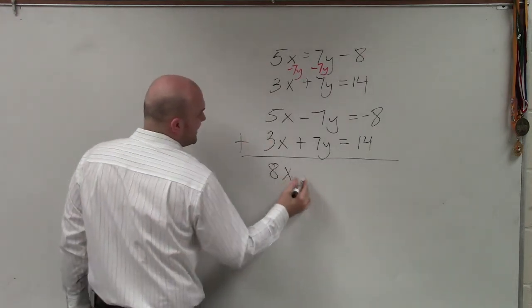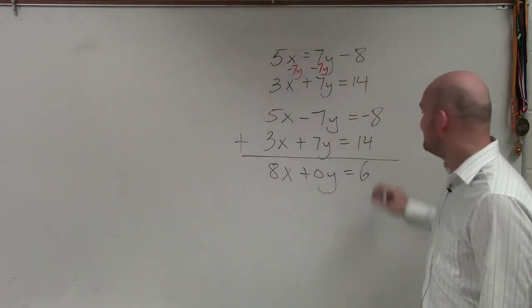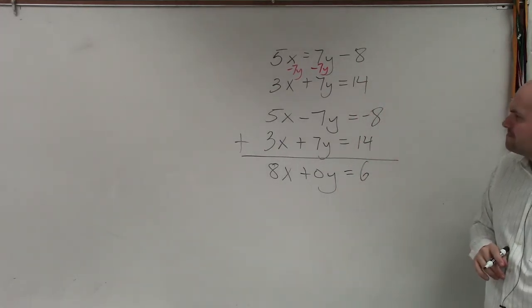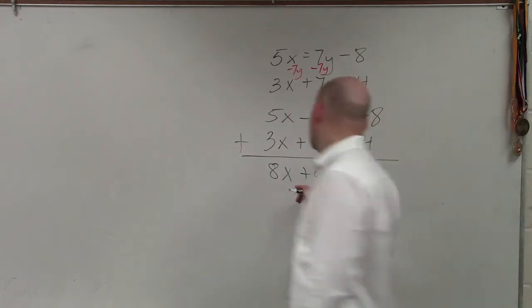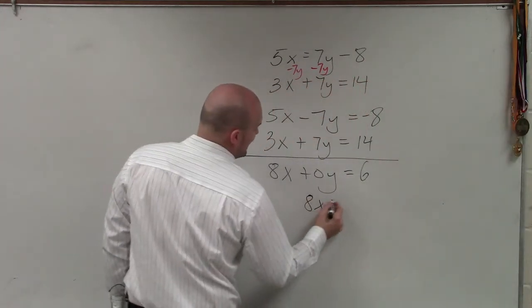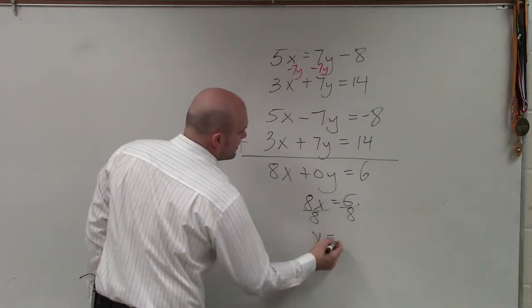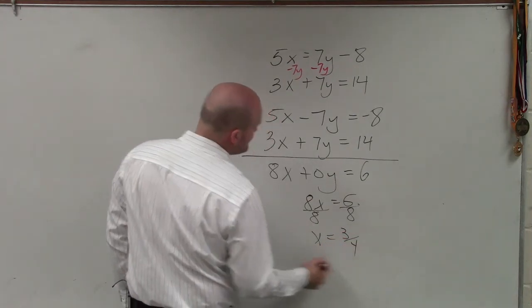So therefore, I get 8x plus 0y equals positive 6. You made you laugh. That's five points, Mr. B Williams. Because I didn't laugh, I was just... All right. So now I have 8x equals 6. Divide by 8, divide by 8. And x equals 6 eighths, which can be reduced to 3 fourths.